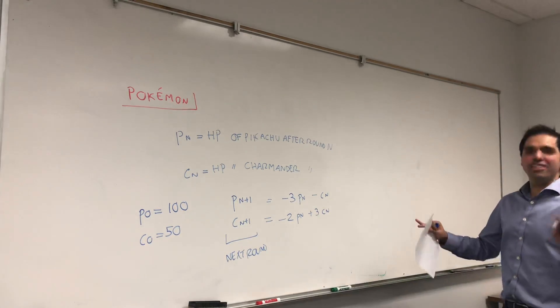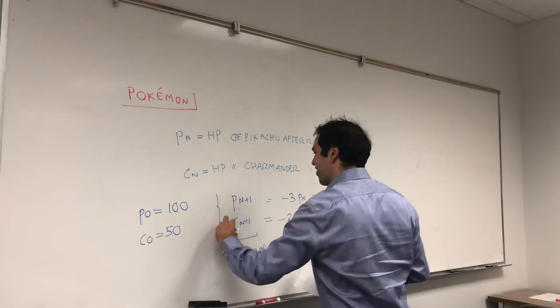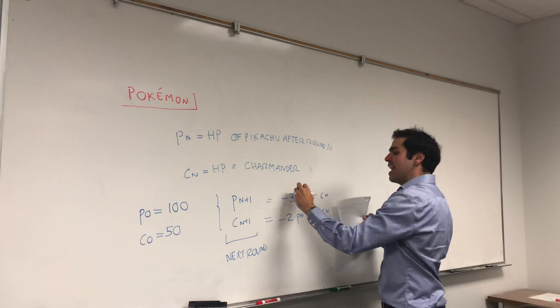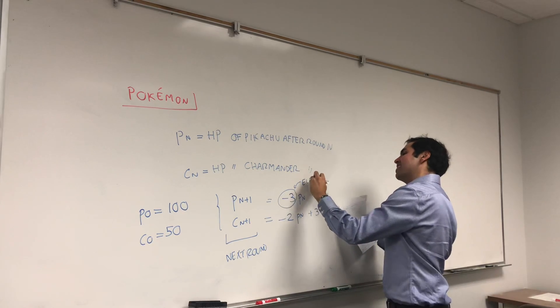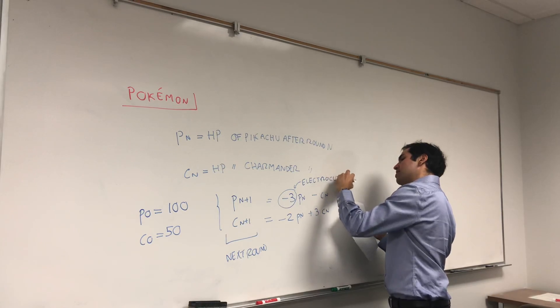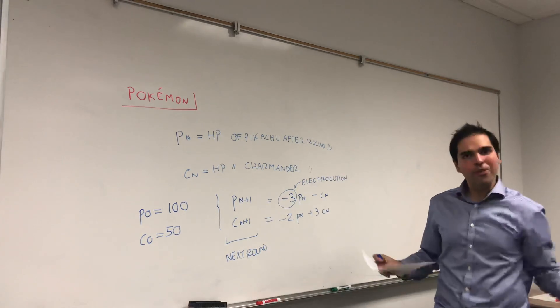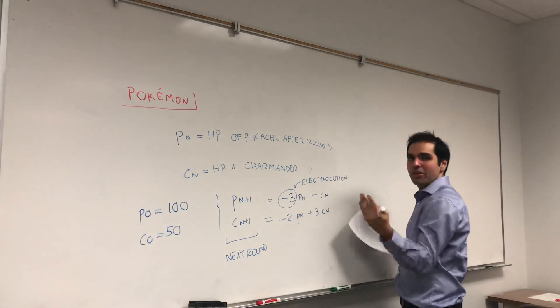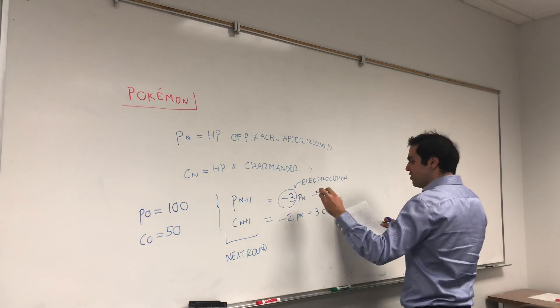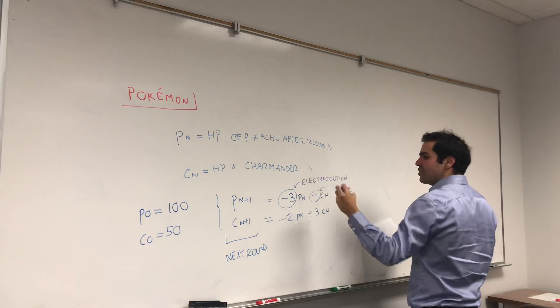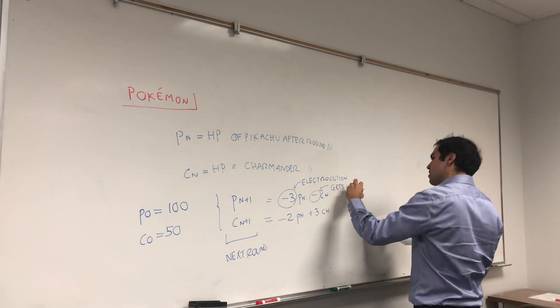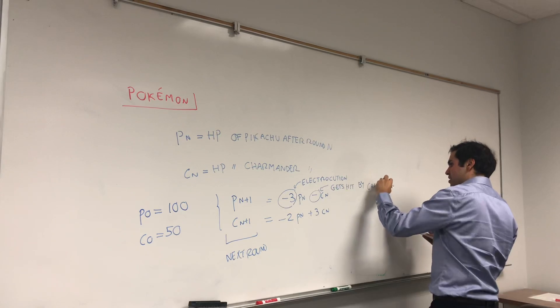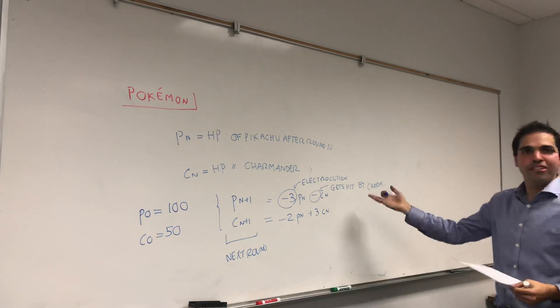Let me explain you the strategy of this game. Pikachu isn't very smart. At every point, he electrocutes itself. So this is electrocution. Whenever it hits Charmander, it electrocutes itself and it loses minus 3 times its current HP. And also, not only that, it gets hit by Charmander.